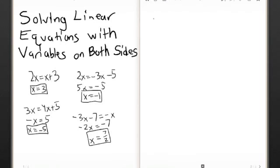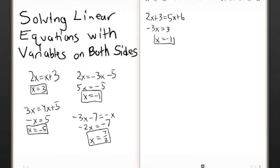Now let's move on to equations where we have an x and a regular number on both sides. So, 2x plus 3 equals 5x plus 6. What we want to do here is get all the x's on one side and all the numbers on the other side. So, 2x minus 5x equals negative 3x, and on the other side, 6 minus 3 equals 3. So, x equals negative 1.